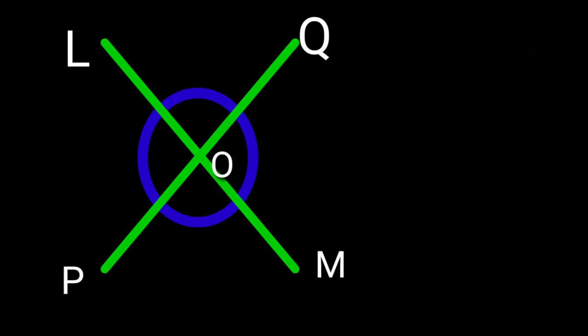Here you can see two lines, LM and PQ, are crossed at the same point O. So we can see four angles there.